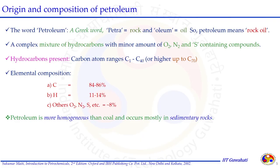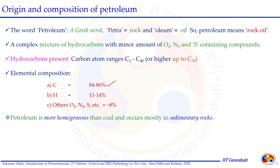This hydrocarbon fluid is called petroleum. The word petroleum is a Greek word broken into two parts: petra, meaning rock, and oleum, meaning oil — so petroleum means rock oil. It is a complex mixture of hydrocarbons with minor amounts of oxygen, nitrogen and sulfur compounds. Hydrocarbons present in petroleum range from C1 (methane) to C40 or even C70 or more complex systems. In terms of elemental composition, petroleum is predominantly carbon, supported by hydrogen at 11 to 14 percent, with the remainder being other substances.